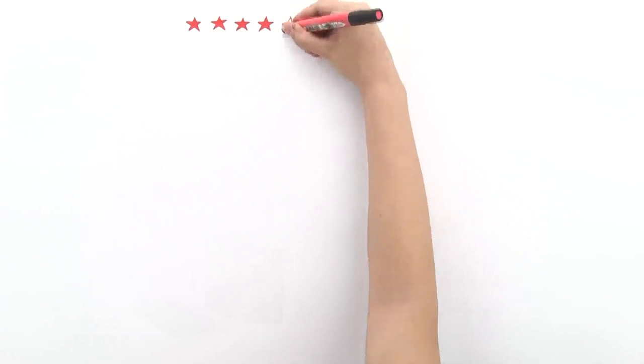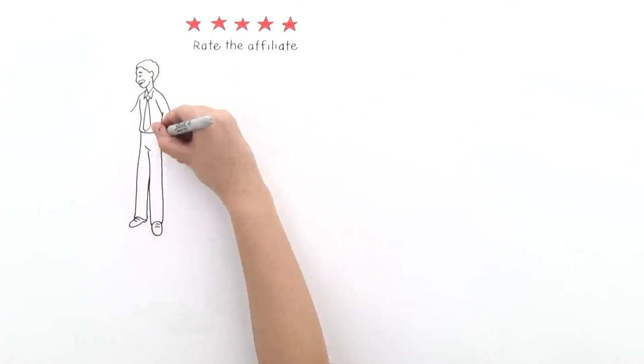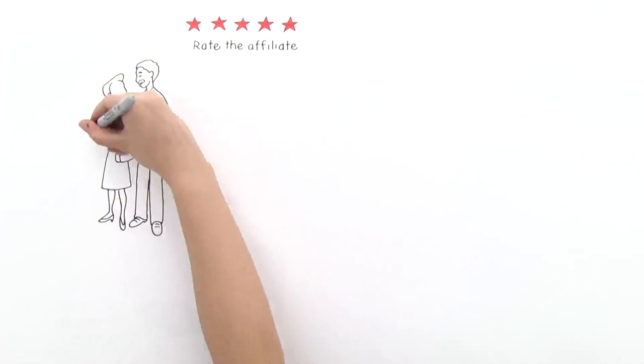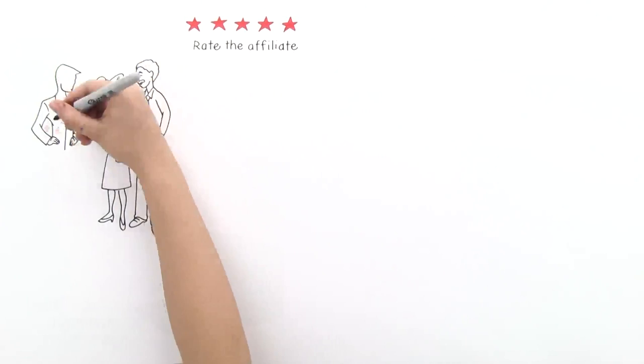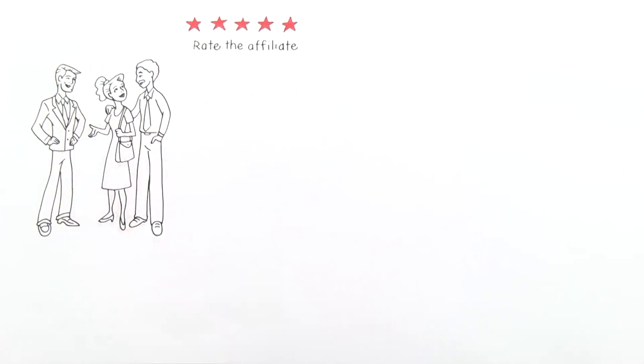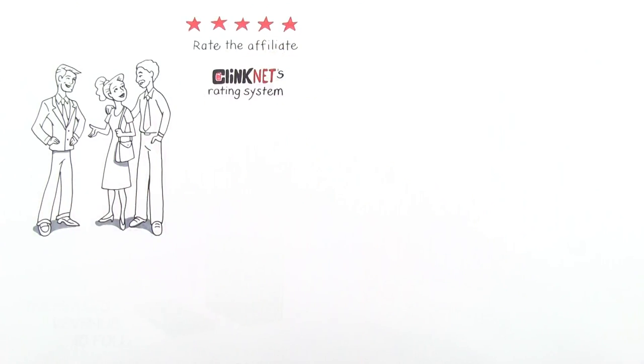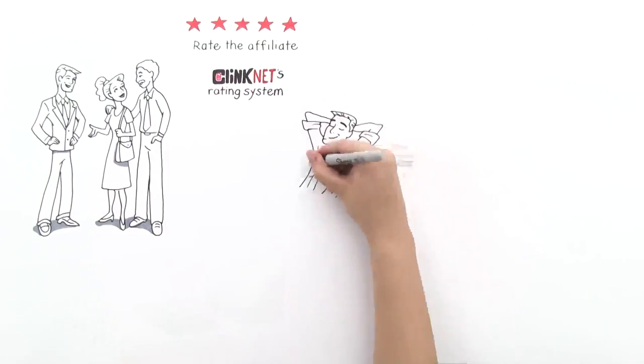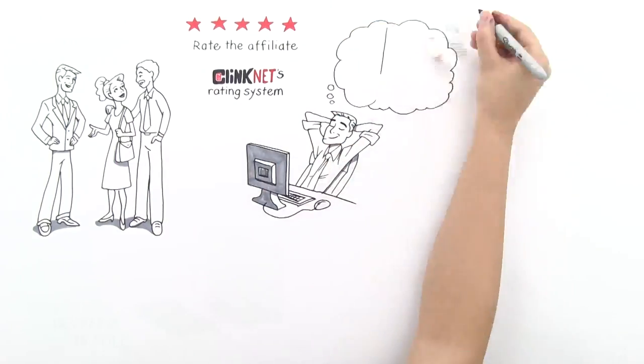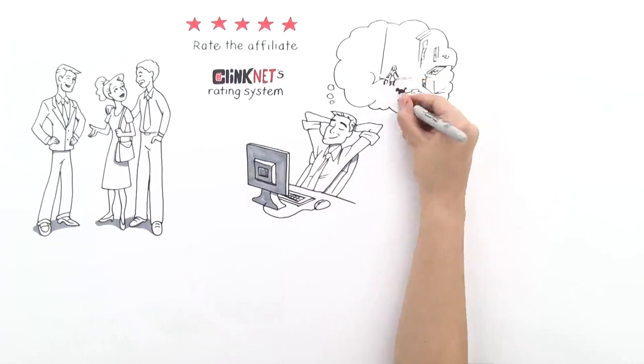Bob loves that he can rate the affiliate each time they carry out a job. Why? Because affiliates want good ratings. And whether they get one client or 20, they will do a great service to protect their rating. ClinkNet's rating system is visible to the whole industry, giving affiliates true motivation to do a good job. Now his affiliates are guaranteed to do an excellent job, regardless of how many clients Bob sends their way.